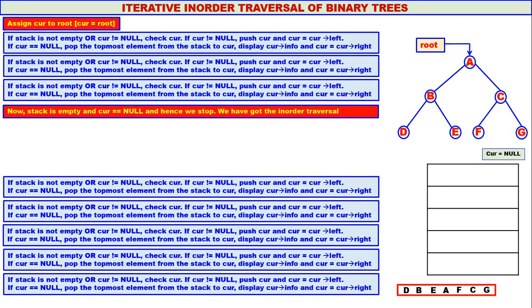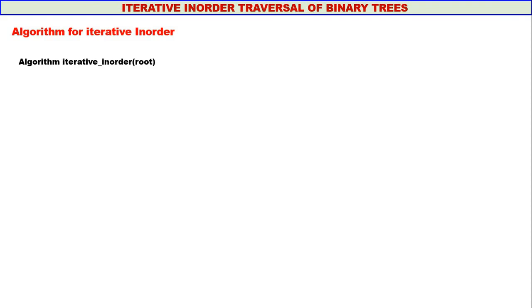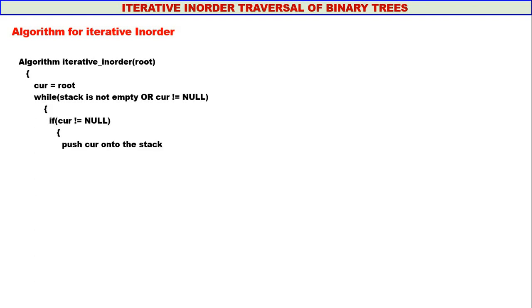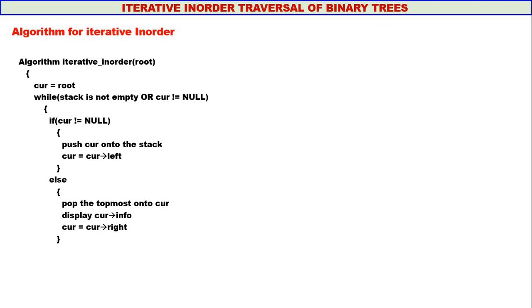The logic for iterative inorder traversal is quite simple and straightforward. Let us go to the algorithm. The algorithm: curry equals root. While stack is not empty or curry not equal to null — if curry is not equal to null, push curry onto the stack and move curry to the left. Otherwise, pop the topmost into curry, display curry info, and move curry to the right. Do this until both conditions become false, then come out.